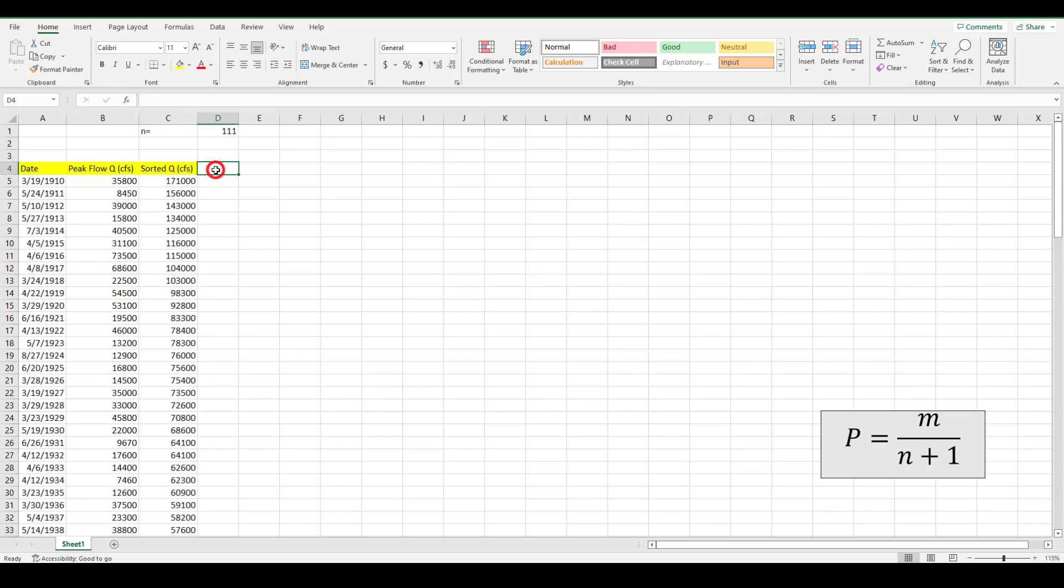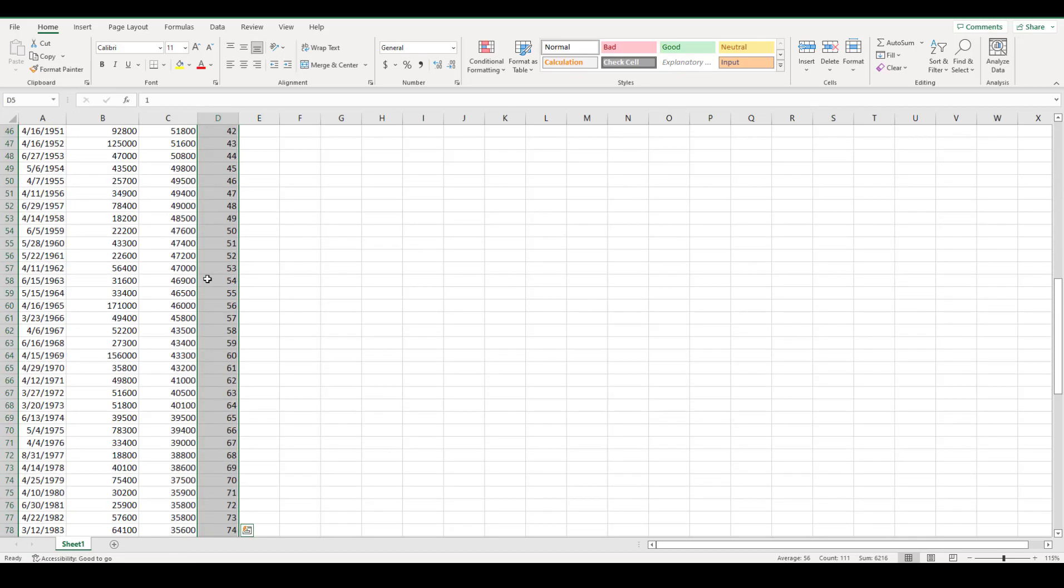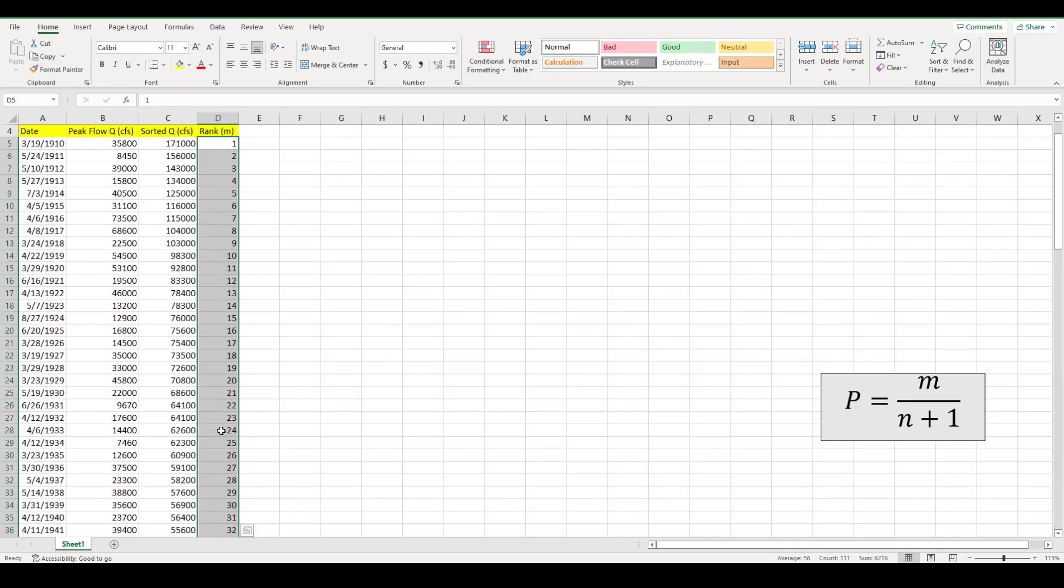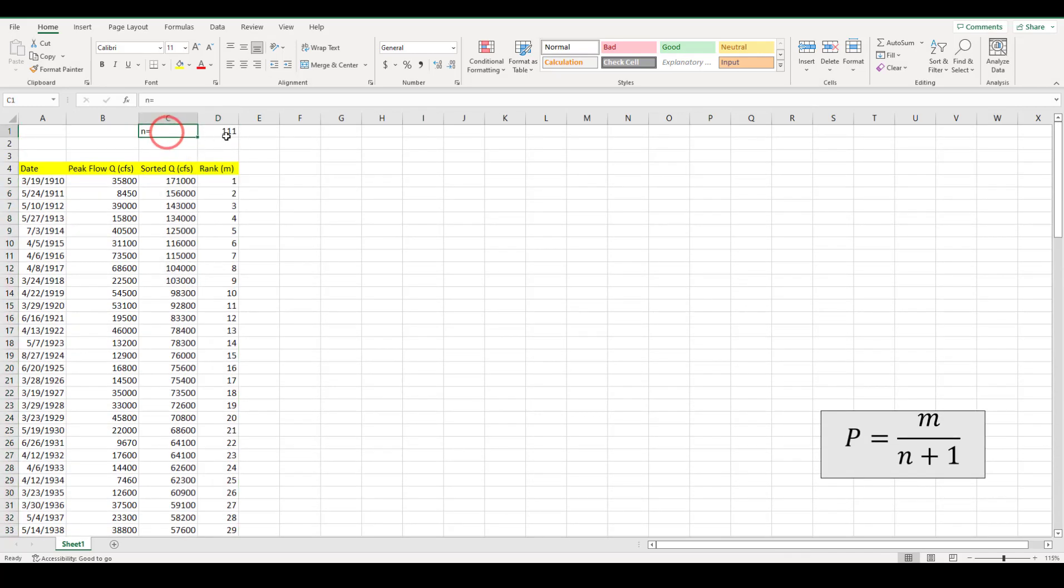Now you can see the largest flow rate in CFS is right over here and the smallest flow rate in CFS is right over here. Perfect. Now the next column that I want to add is rank. And rank, if you remember, was M in the Weibull equation. This little M is the rank. So we want to rank all these flows from the largest, which is number one, all the way to the smallest. So if I rank this, logically the last one should be 111 because we know that N here is equal to 111.